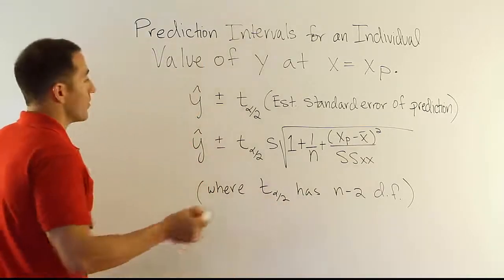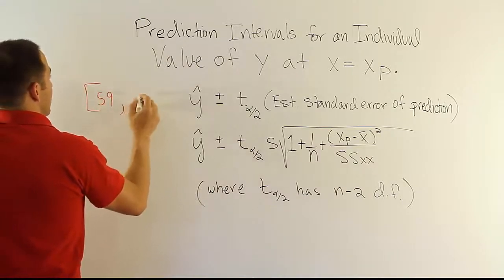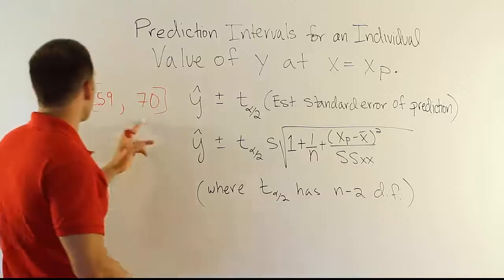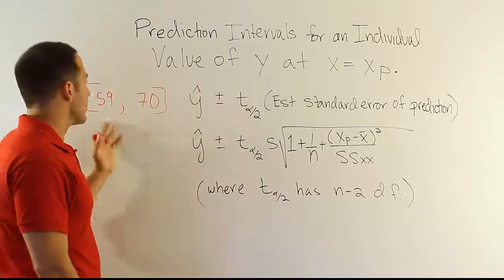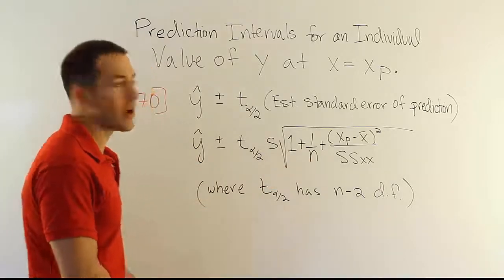So we might get an answer when we're done, something like 59 inches up to 70 inches or something. That might be a very wide interval, and that's pretty common, especially if you don't have a large sample size and your model isn't that great.